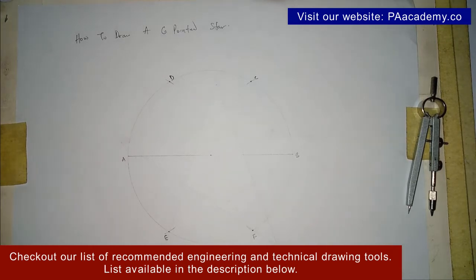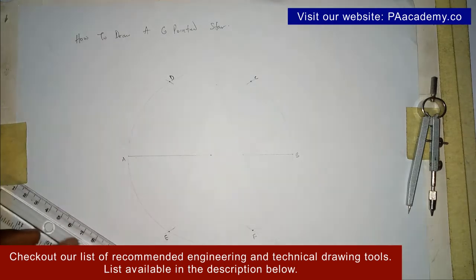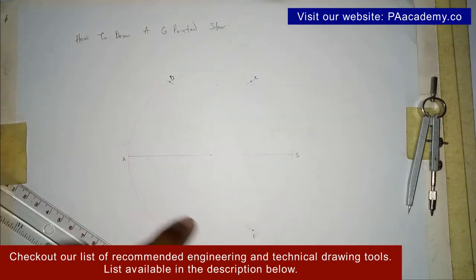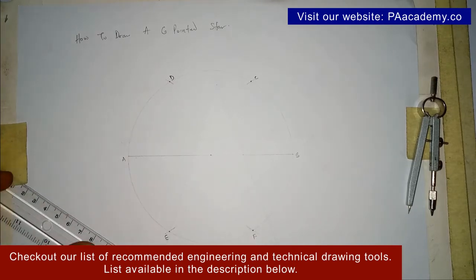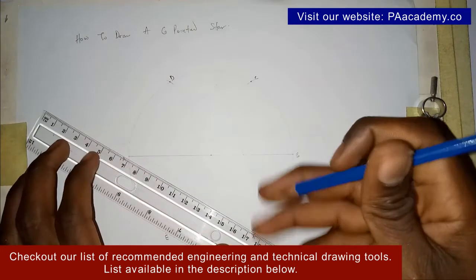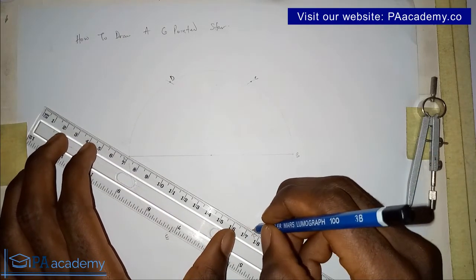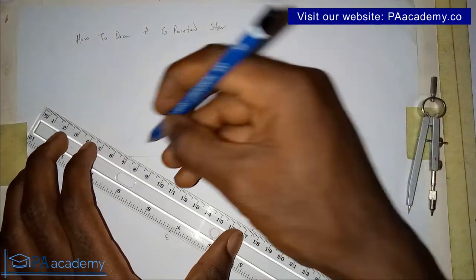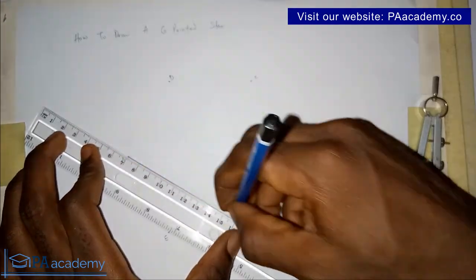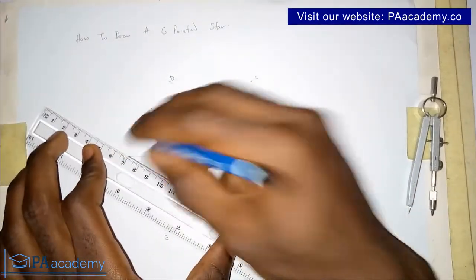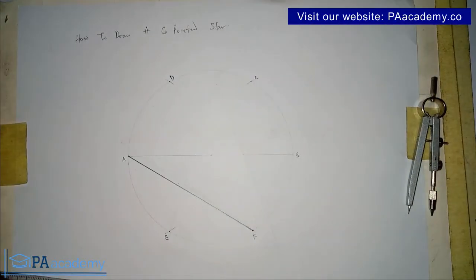So now let's go ahead and start drawing the star. Let's start from point A. So what we are going to do is we are going to draw a line from point A to point F, skipping point E. So it's going to look like this. So this time around we are going to be using an outline. That's a bold line, a thick line. So from point A to point F. So you are going to be having something like this.